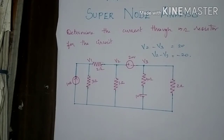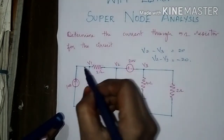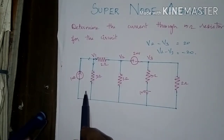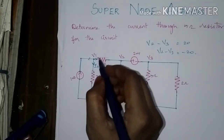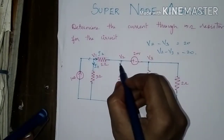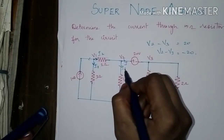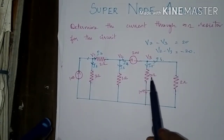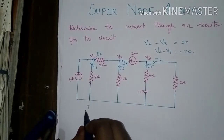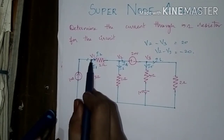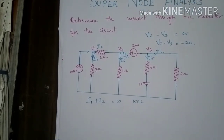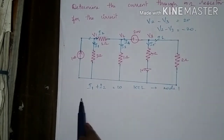Now assigning current directions — assume V1 is at higher potential, so all currents will be leaving the node. At node 1 we write the KCL equation. The currents leaving are I1, I2, I3, and I4. At the super node, the outgoing currents are I5 and I6. They have asked for the current through the 5 ohm, which is I5. According to KCL at node 1, incoming current equals the sum of outgoing currents: I1 plus I2 equals 10.